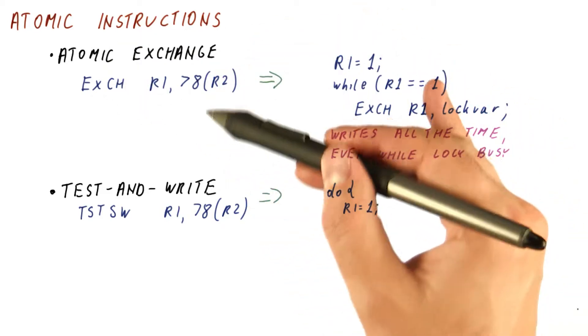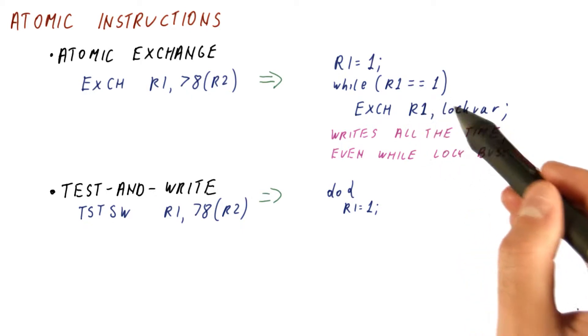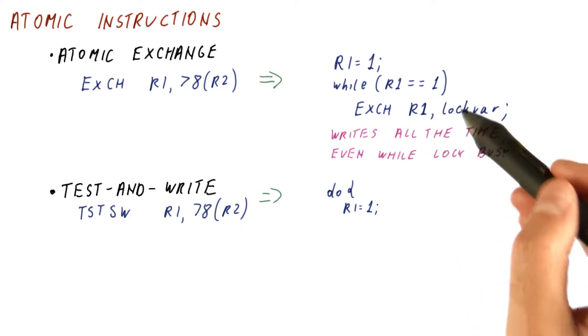So coming back to our atomic instructions, we have seen that we can have an atomic exchange where the problem was that it keeps writing to the lock var even when it's not available.